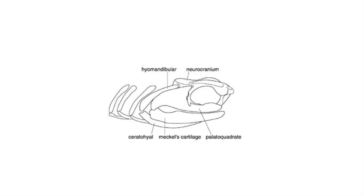A hyomandibular and ceratohyal are a second pair of cartilage supports for the jaw joint. These cartilaginous structures fit against the neurocranium, a cartilaginous brain case structure.